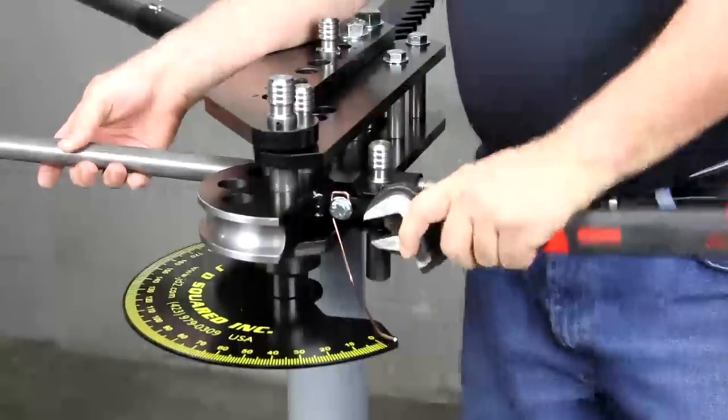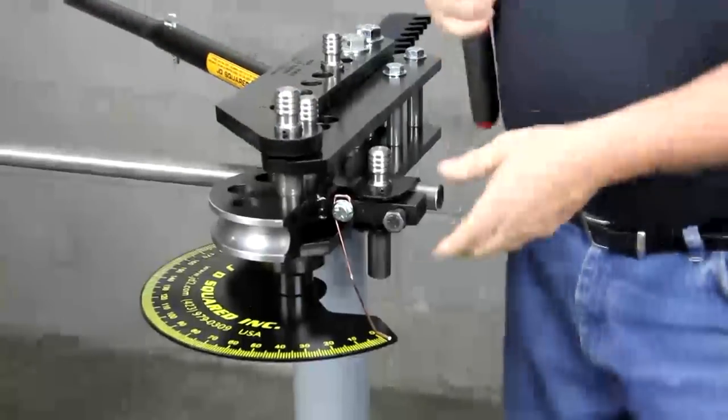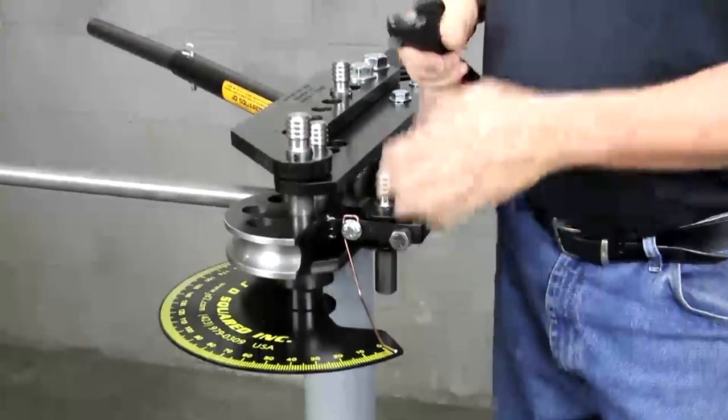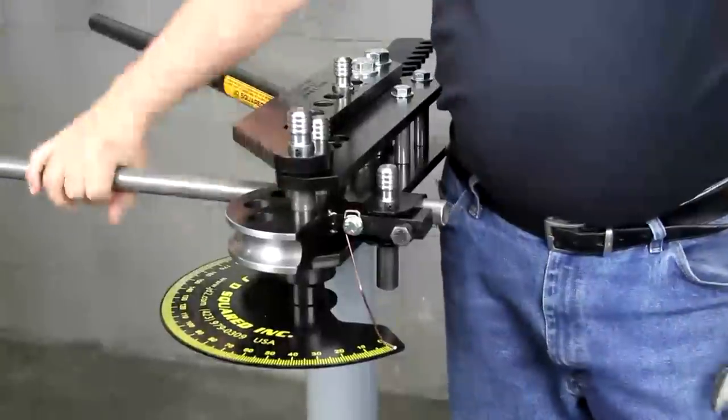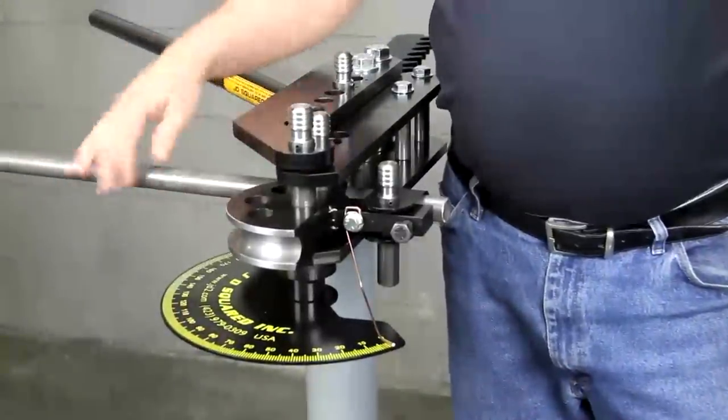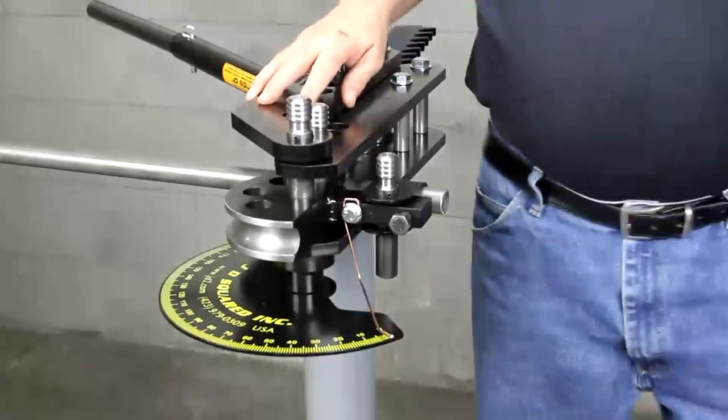What this is here, this bolt here is on most of our dies, at least the ones that use the ratchet as operation, and what it's going to do is prevent the tubing from sliding back through the die set as you're bending. This will help prevent wrinkling and other ill effects that you definitely don't want to see.